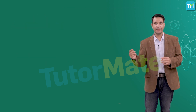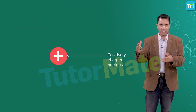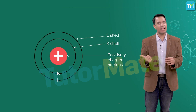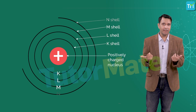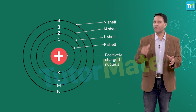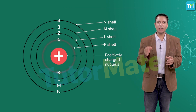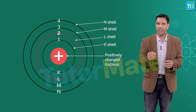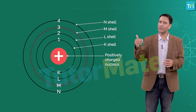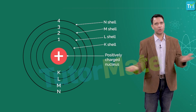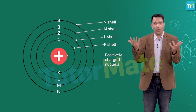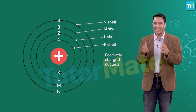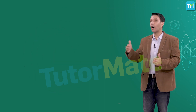Energy levels can be represented by letters — K, L, M, N, and so on — where K is the first orbit, L the second, M the third, and so on. They can also be denoted by numbers: 1, 2, 3, 4, etc. The energy levels are counted from the center moving outwards.